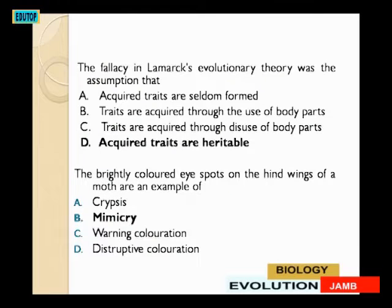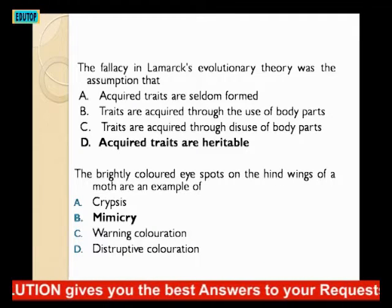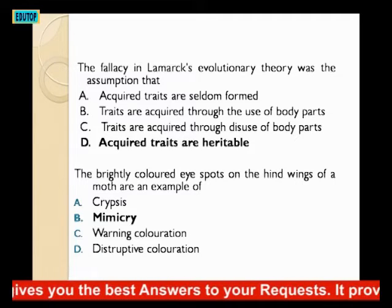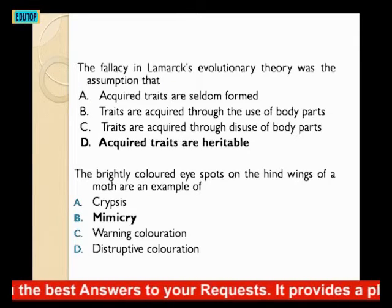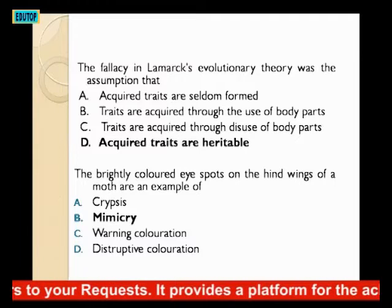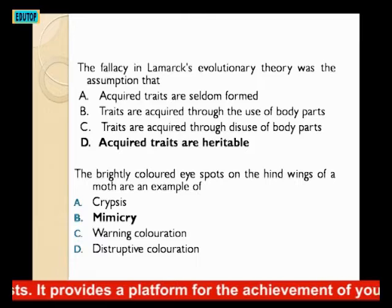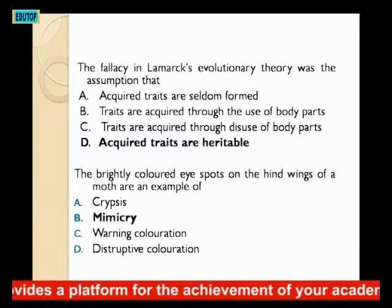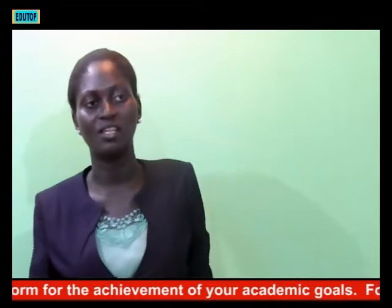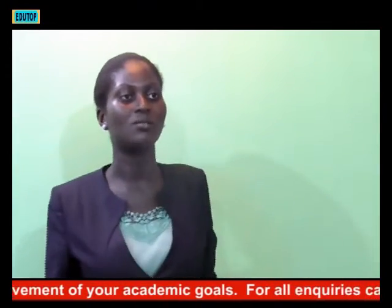The next question: the fallacy in Lamarck's evolutionary theory was the assumption that — A: acquired traits are seldom formed; B/C: traits are acquired through the use of body parts; D: acquired traits are heritable. The fallacy in that is option D — acquired traits are heritable.